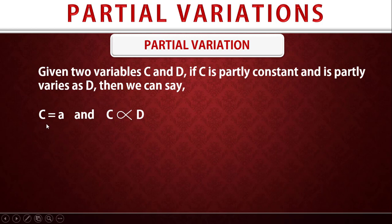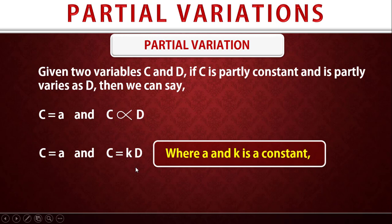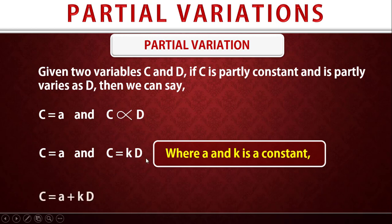Continuing: we have C equals A, and C is directly proportional to D. Changing the proportional sign, we get C equals A and C equals kD, where k is also a constant. So we have two constants. The next thing is to combine these two together: C equals A plus kD. This is now our connecting formula.